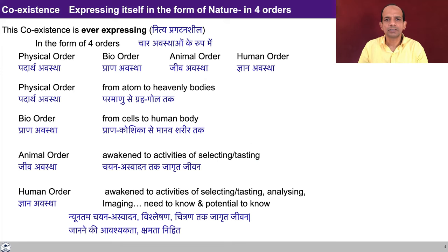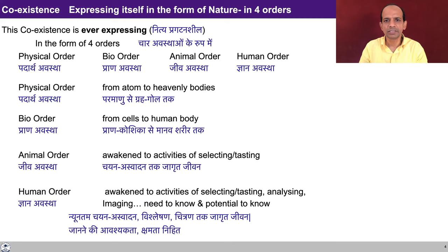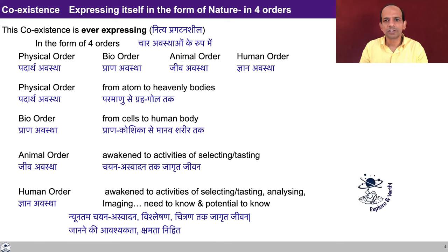The expression of coexistence is nature, and nature is there in four orders. Nature is made up of only two kinds of units: conscious and material, organized in four orders — physical order, bio order, animal order, and human order. The physical order has material units from atom to heavenly bodies; the bio order has bio units from cells to the human body. The animal order is a coexistence of one conscious unit (the self) and one material unit (the body), and the awakening of the self is only up to the activity of selecting and testing.